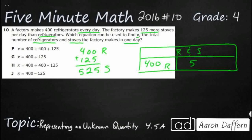And it looks like I'm getting 525 stoves. Let's put that right here, 525 stoves. And let's just make sure. If I take my 525 stoves, if I take away my refrigerators, is that 125 more? And yes, that's 125.